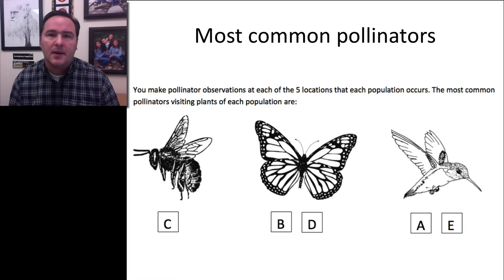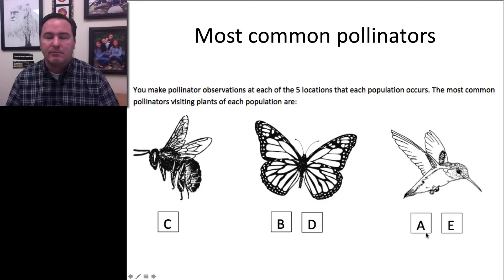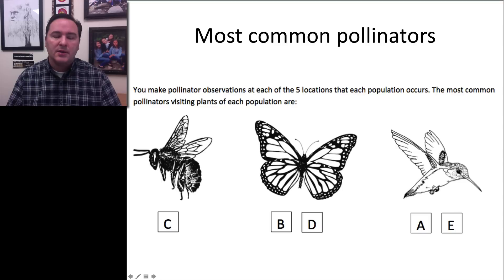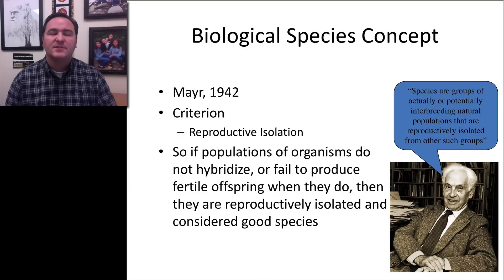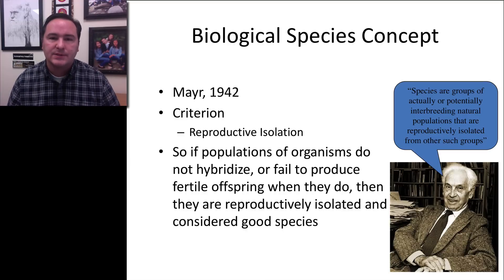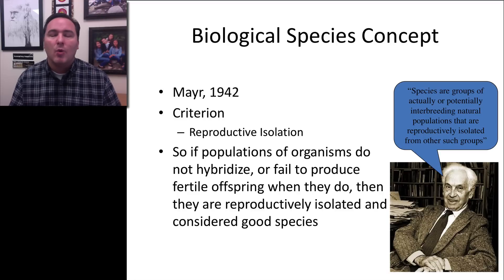Here's separate evidence for the five flowers. These flowers are pollinated by different species: flower C is only pollinated by bees, flowers B and D by butterflies, and flowers A and E by hummingbirds. If flower C is only pollinated by bees and the bees never visit B, D, A, or E, then C is genetically never going to interbreed with the other flowers. This brings us to the biological species concept.